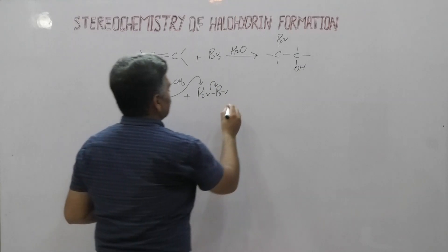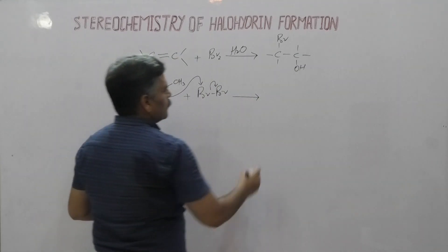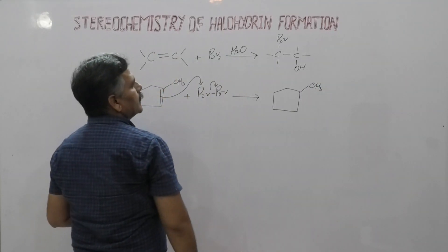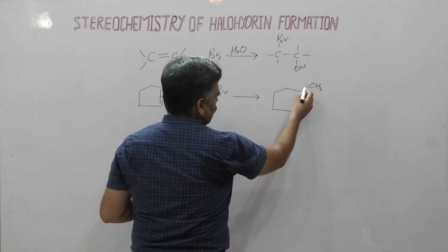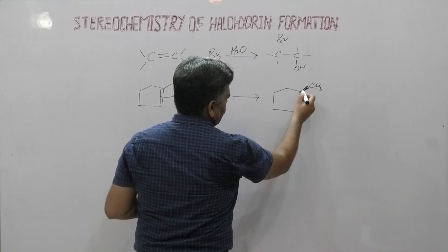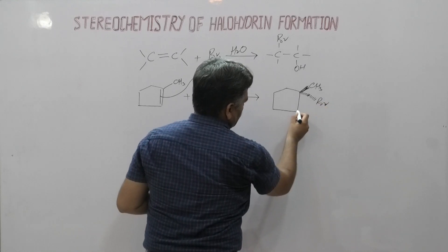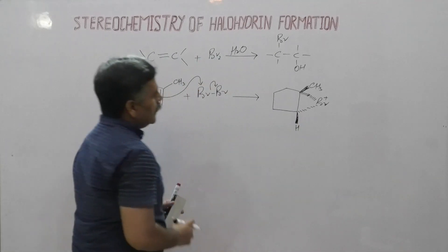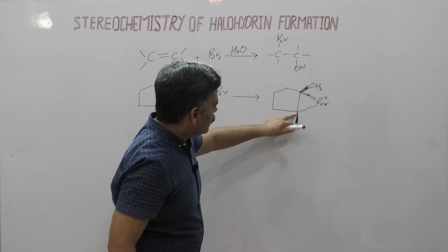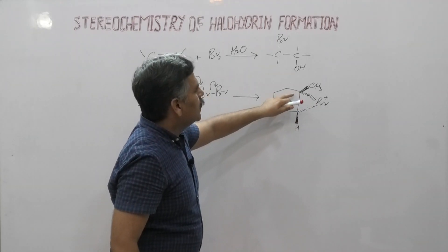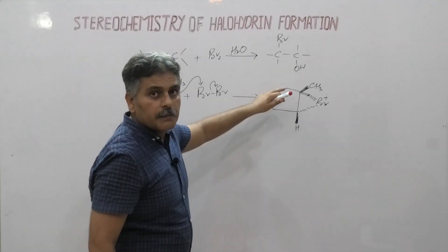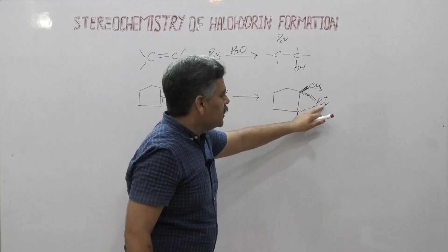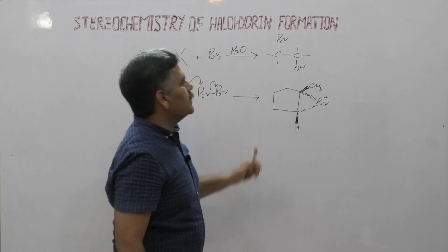In the first step, the attachment of Br at the carbon-carbon double bond results in the formation of the bromonium ion. Here we have the methyl group. During the formation of the bromonium ion, Br is positively charged and here we have hydrogen. When this bromine attaches at the less substituted carbon, then positive charge is present at the other carbon and it is a tertiary carbocation. We know that tertiary carbocations are more stable compared to secondary carbocations. So, though here we have the bromonium ion, the attachment of this bromine is at this carbon due to the greater stability of this intermediate.